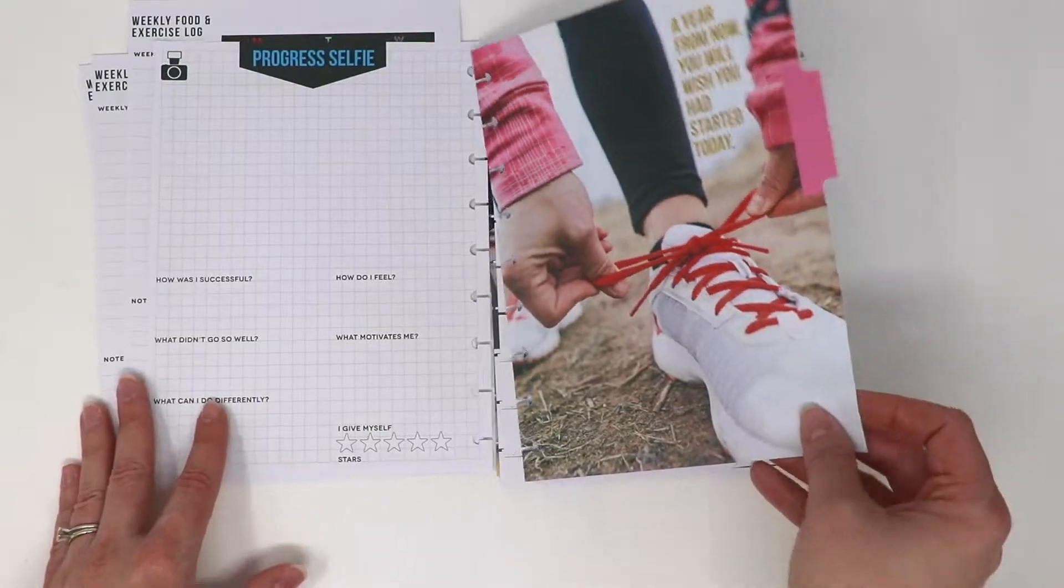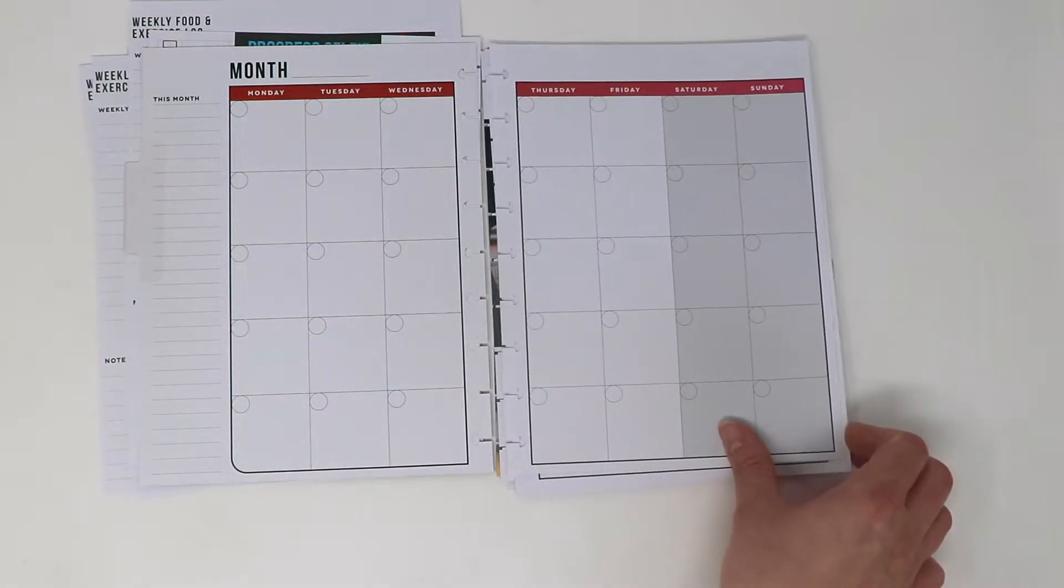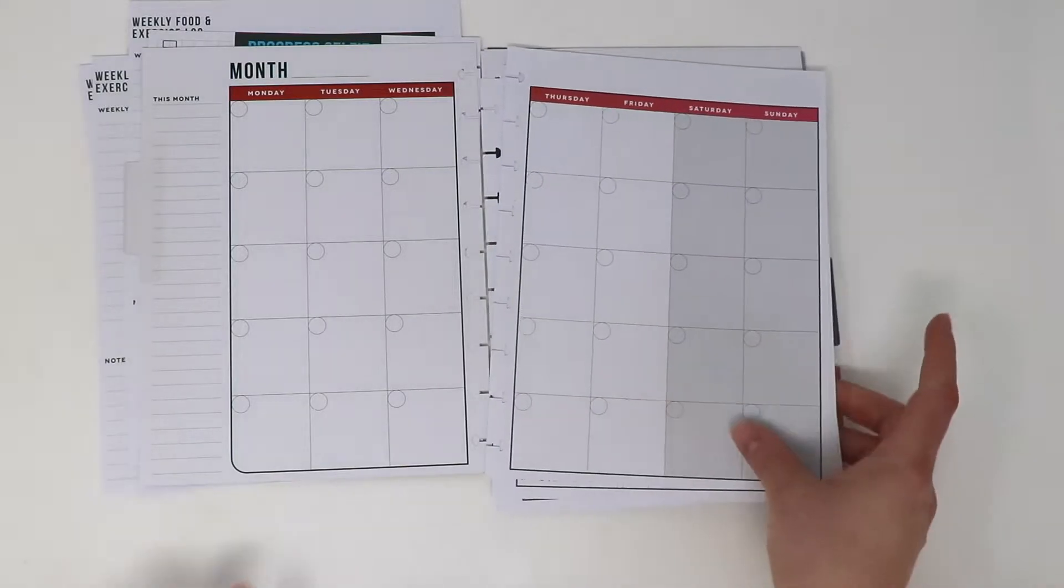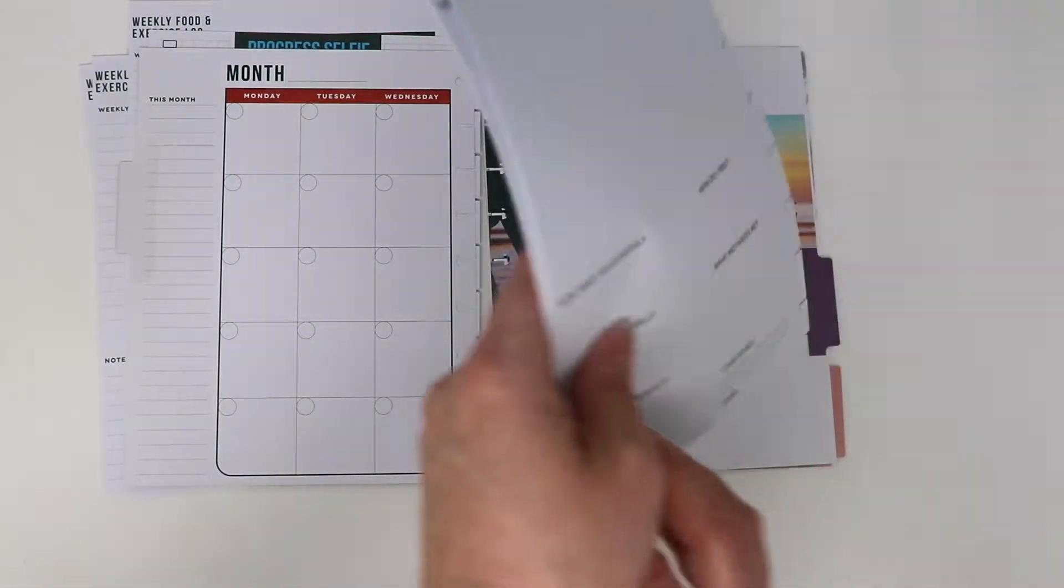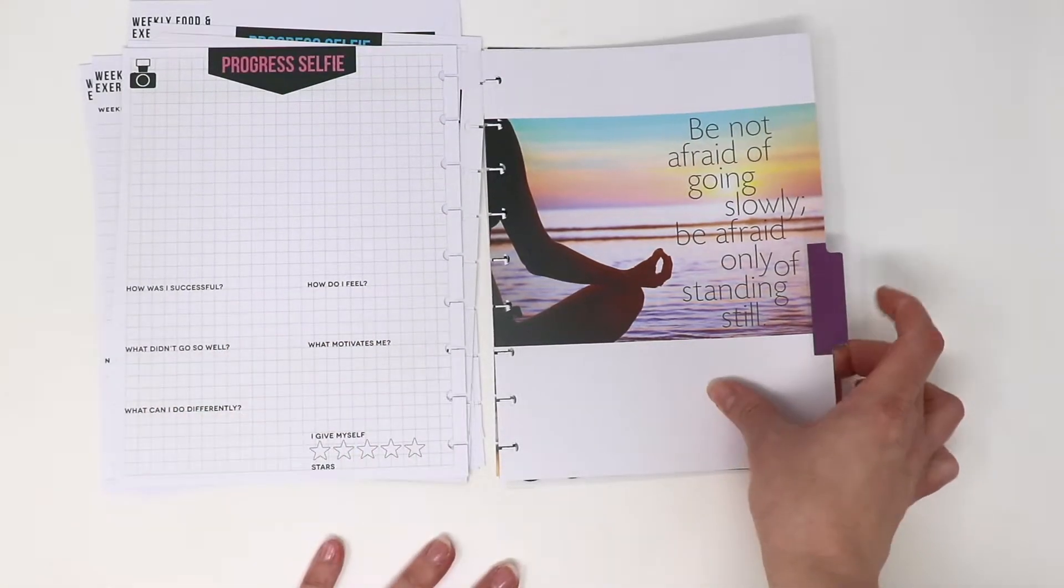Same thing as before, it gives you five different weekly schedules. Same questions as before, just a different divider: 'You're not afraid of going slowly, be afraid only of standing still.'